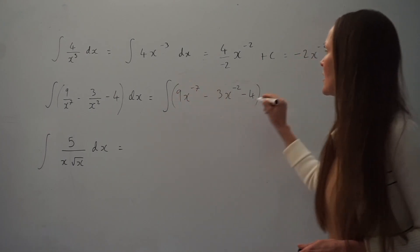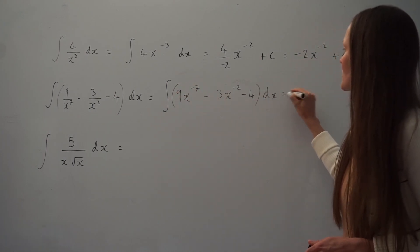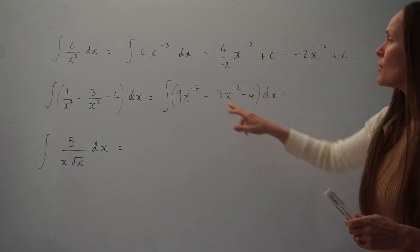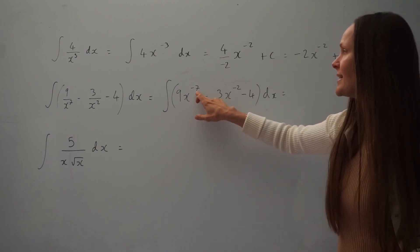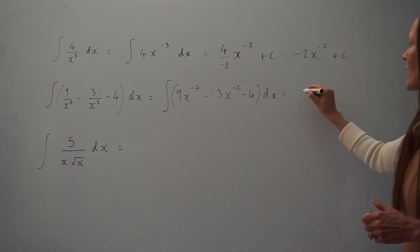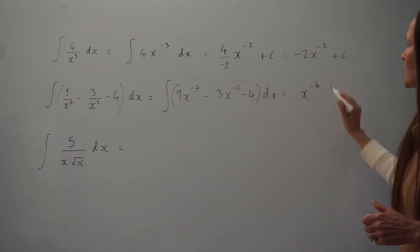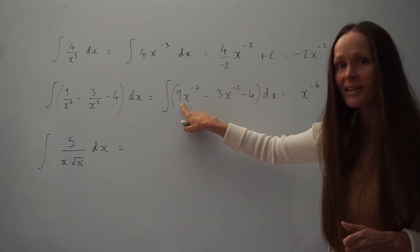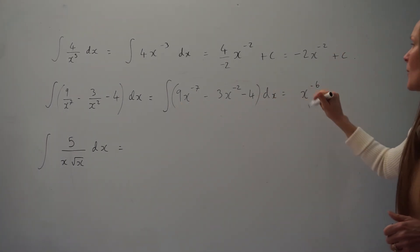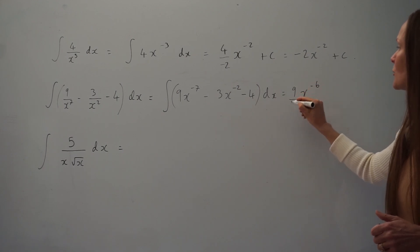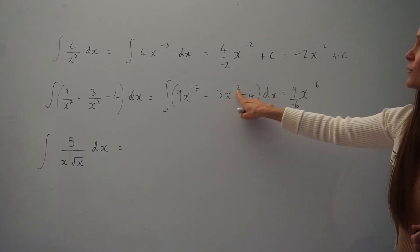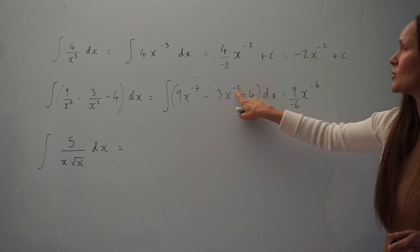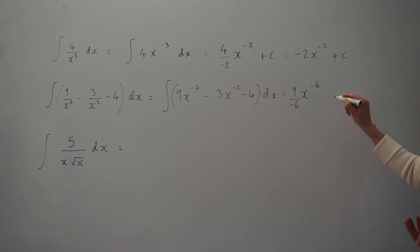We have to integrate this expression with respect to x. The power on the first term is negative 7. Adding 1 gives negative 6, so we have x raised to the power of negative 6, and we're dividing 9 by the new power. Moving to the next term, adding 1 to negative 2 gives negative 1, so x to the negative 1.